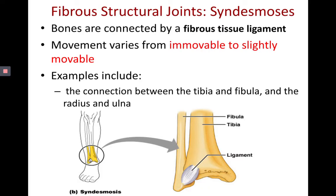Here's another fibrous structural joint — a syndesmosis. Think ligaments whenever you see syndesmosis. It's just a fibrous piece of tissue that attaches bone to bone. A syndesmosis is essentially a ligament, and most of these ligaments are short, so they won't allow a lot of movement. The connection between the tibia and the fibula is a great example of a syndesmosis.